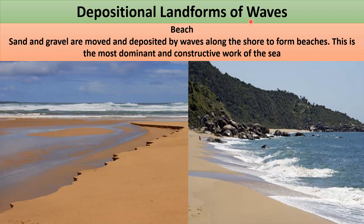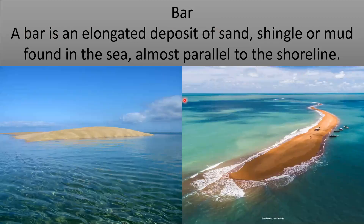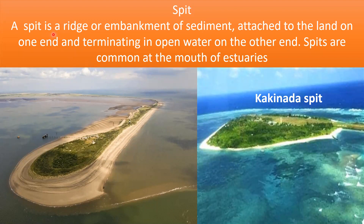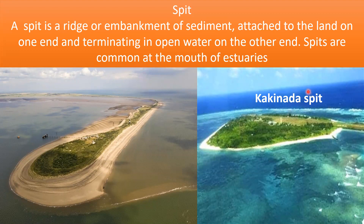Depositional landforms of waves. Beach: sand and gravel are moved and deposited by waves along the shore to form beaches. This is the most dominant and constructive work of the sea. Bar: a bar is an elongated deposit of sand, shingle or mud found in the sea, parallel to the shoreline. Spit: a spit is a ridge or embankment of sediment attached to the land on one end and terminating in open water on the other. Spits are common at the mouth of estuaries and are formed where the prevailing wind blows at an angle to the coastline, resulting in longshore drift. An example is Kakinada Spit in Andhra Pradesh, India.